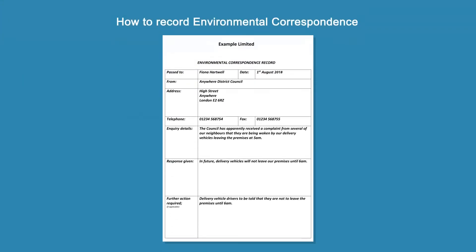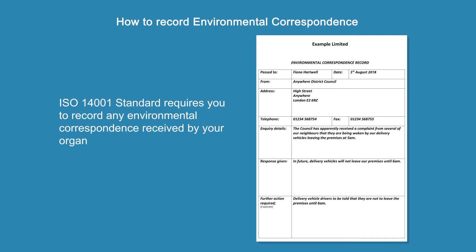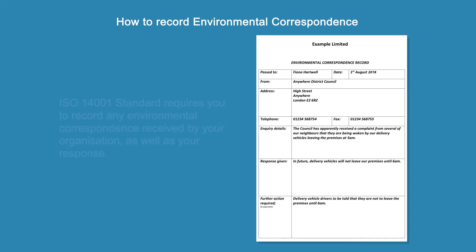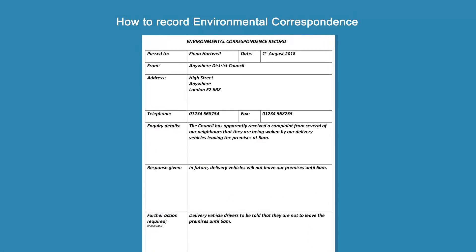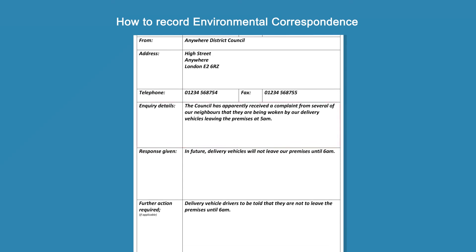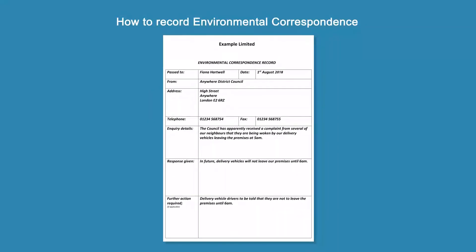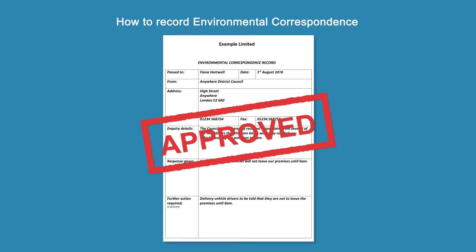Now let's look at environmental correspondence. Here is a template you can use. The ISO 14001 standard requires you to record any environmental correspondence received by your organisation as well as your response. It is important that you record the person the correspondence was passed to, the date it was sent, who it was from, what it was about, and what the response was, as well as any further action required. It is commonly found during external audits that businesses fail to record environmental correspondence, so it is essential a record is kept if you wish to prevent a non-conformity.